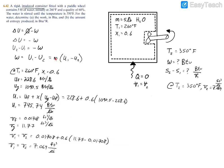We now plug in all values to find the work: W = m(u1 − u2) = 5 lb × (745.74 − 1120.3) BTU/lb. The result is W = −1872.8 BTU. The negative sign indicates work was done on the system by the paddle wheel.